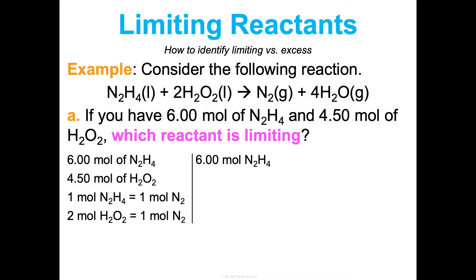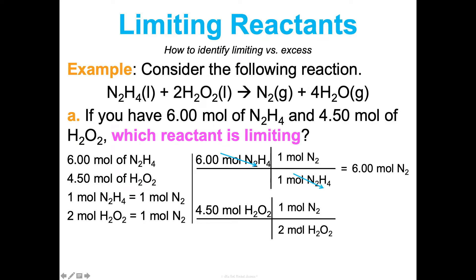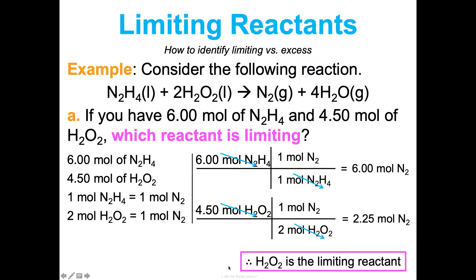Starting with what we have: 6.00 moles of dinitrogen tetrahydride with a 1:1 ratio to nitrogen gas means we could make 6 moles of N₂. But with 4.50 moles of hydrogen peroxide and a 2:1 ratio, we can only make 2.25 moles of nitrogen gas. Comparing these, hydrogen peroxide is going to limit how much nitrogen gas we can make — it's our limiting reactant. It's like our sandwich bread, while dinitrogen tetrahydride is like our peanut butter and jelly.